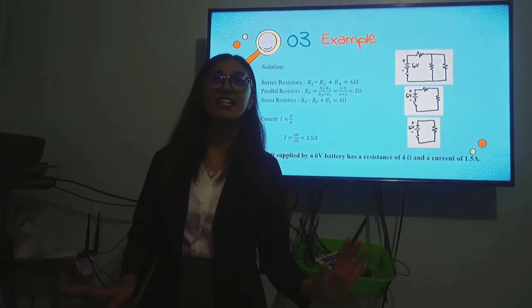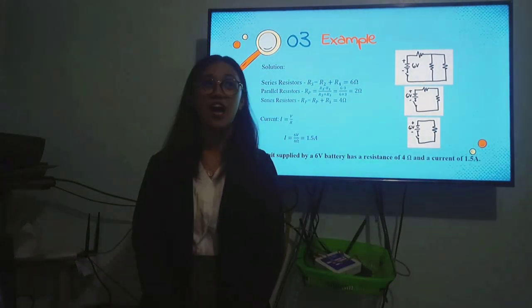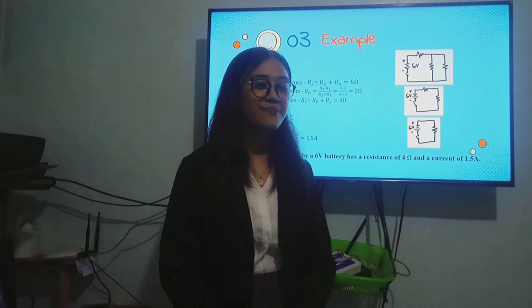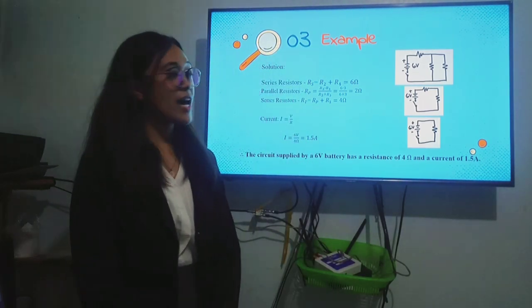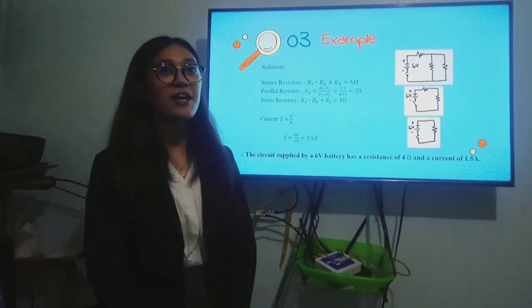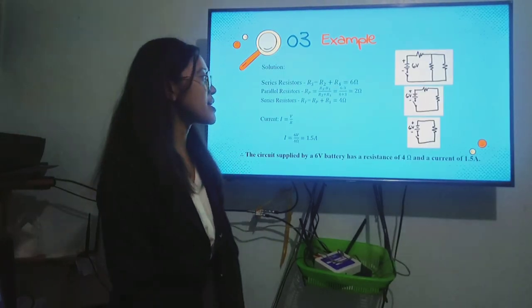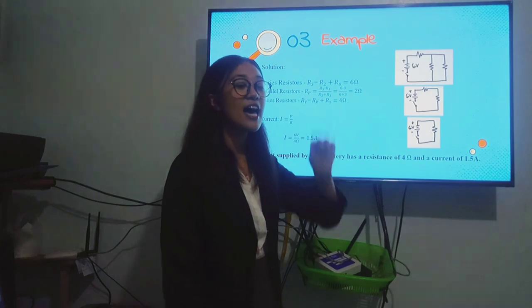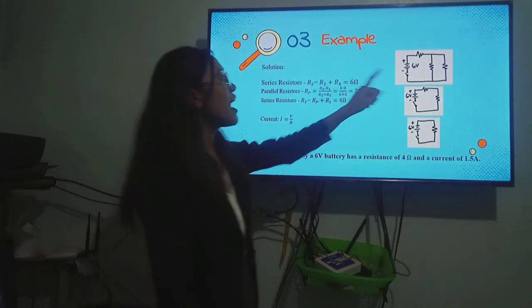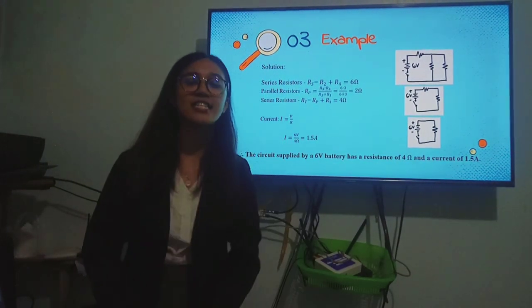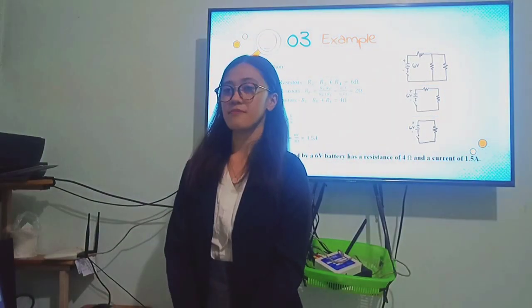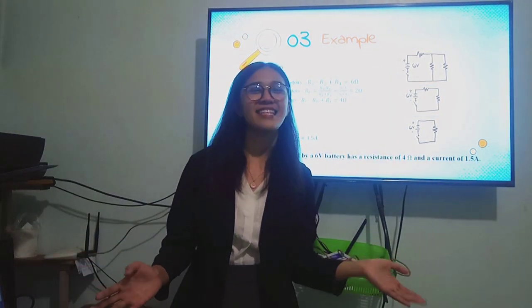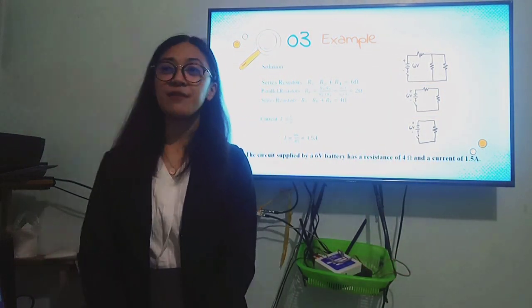Is this clear, class? Do you have any questions? Yes, Paolo. Here, we identify the negative and positive side of a battery by its size of the line. Shorter line represents the negative part of the battery. And the longer line represents the positive side of the battery. So, is this clear, Paolo? Okay, great. Any more questions?